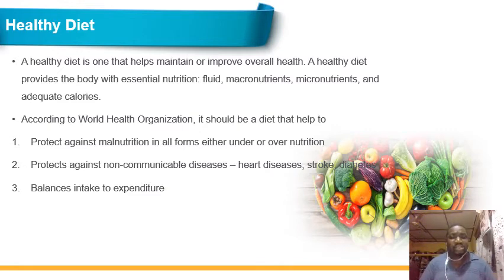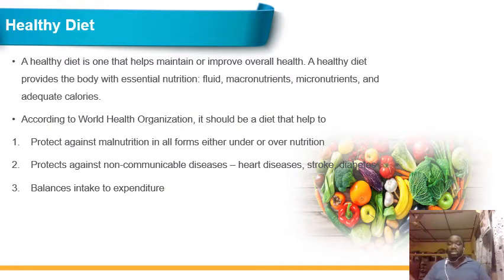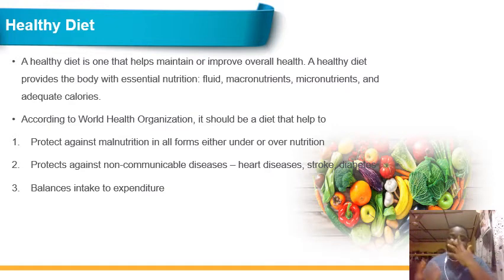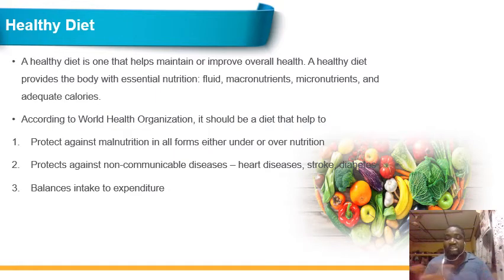A healthy diet also protects against non-communicable diseases like heart disease, stroke, and diabetes. These are diseases that are not transmitted from one person to another. Most of them arise due to environmental factors that put us at risk, our genetic makeup, and also our dietary intake, which may predispose us to diseases like heart disease, stroke, and diabetes.